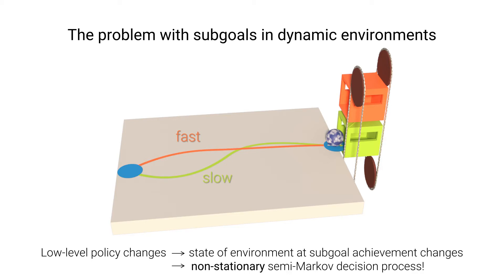As a consequence, the levels of the hierarchy cannot learn concurrently and sample efficiency suffers.